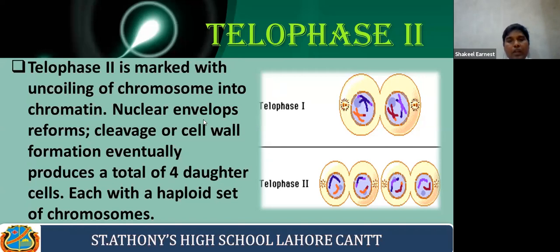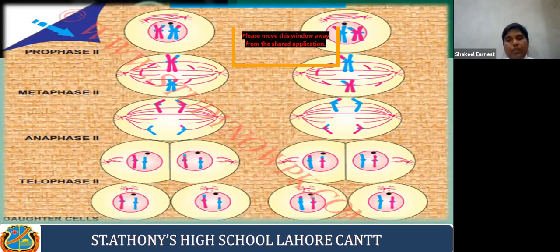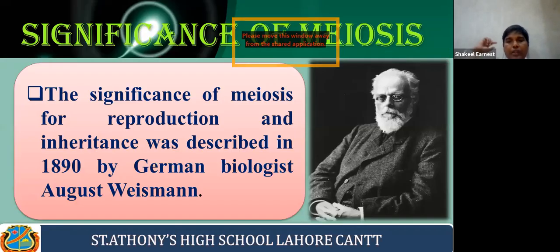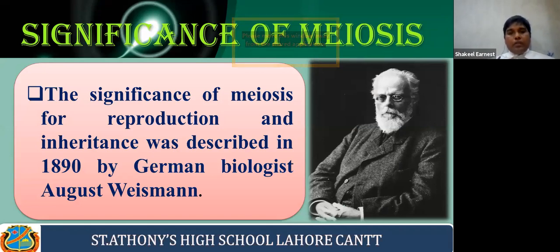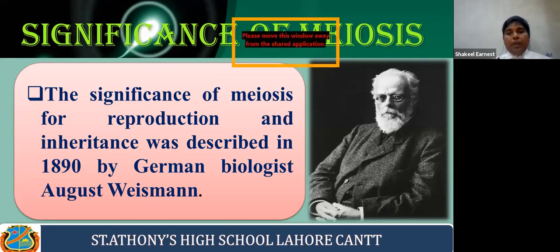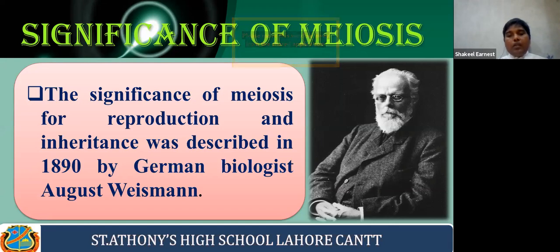We have discussed these things in the first two lectures. Today we are going to start the next topic: the significance of meiosis. In the first slide, you can see that the significance of meiosis for reproduction and inheritance was first described in 1890 by German biologist August Weismann. So you need to remember this point.